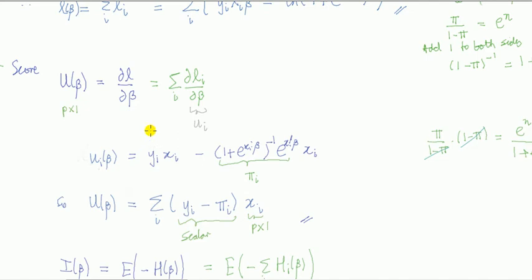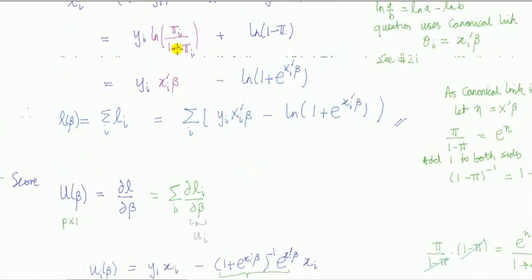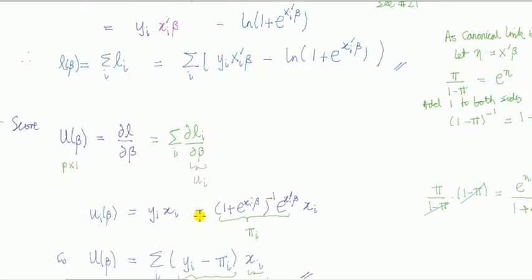Now, the score. Like I have given the likelihood, the score is a p by 1 vector defined by the derivative of the likelihood function. As above, it's easy to concentrate on one observation and then sum it across all observations. So in other words, I'm just going to look at one observation, the i-th observation. Let's call it ui, the derivative of the log likelihood for i-th observation, and then sum it. Well, from above, this is my ui. So that is my li.